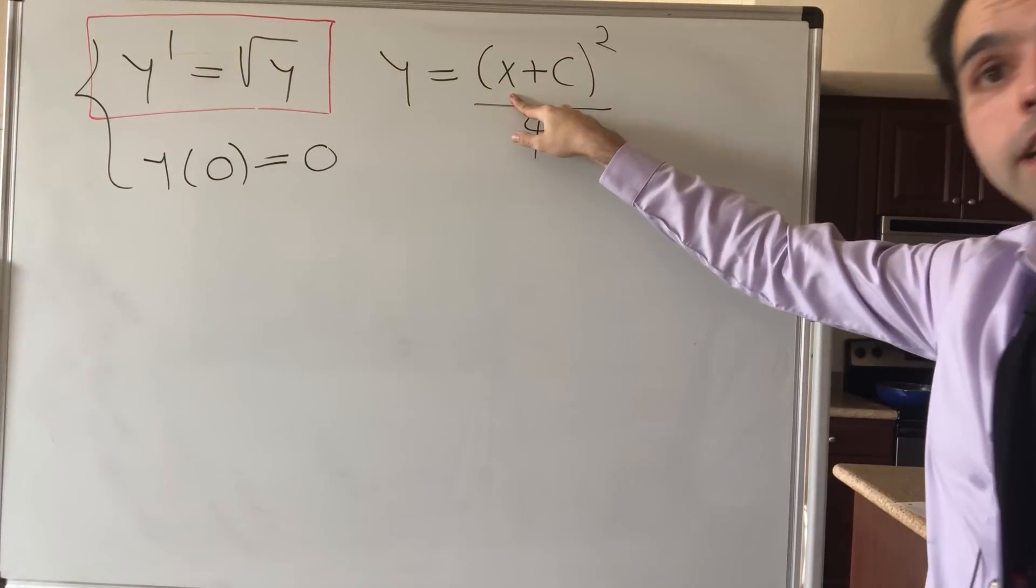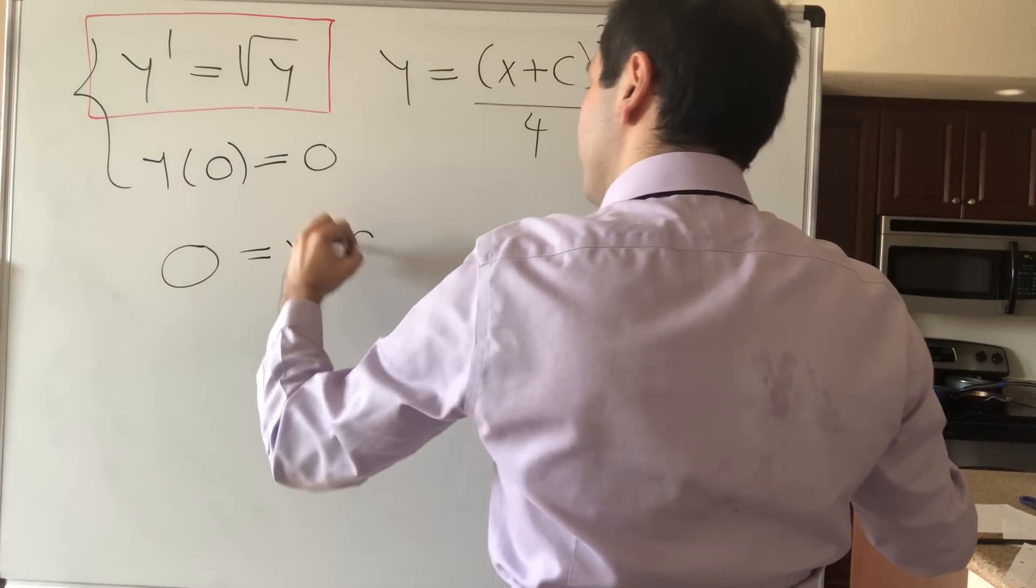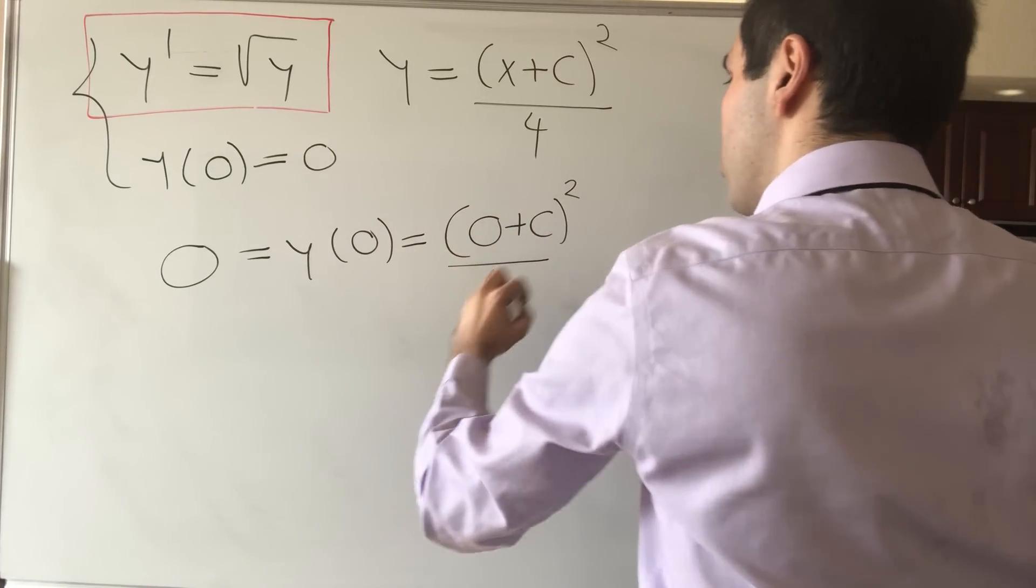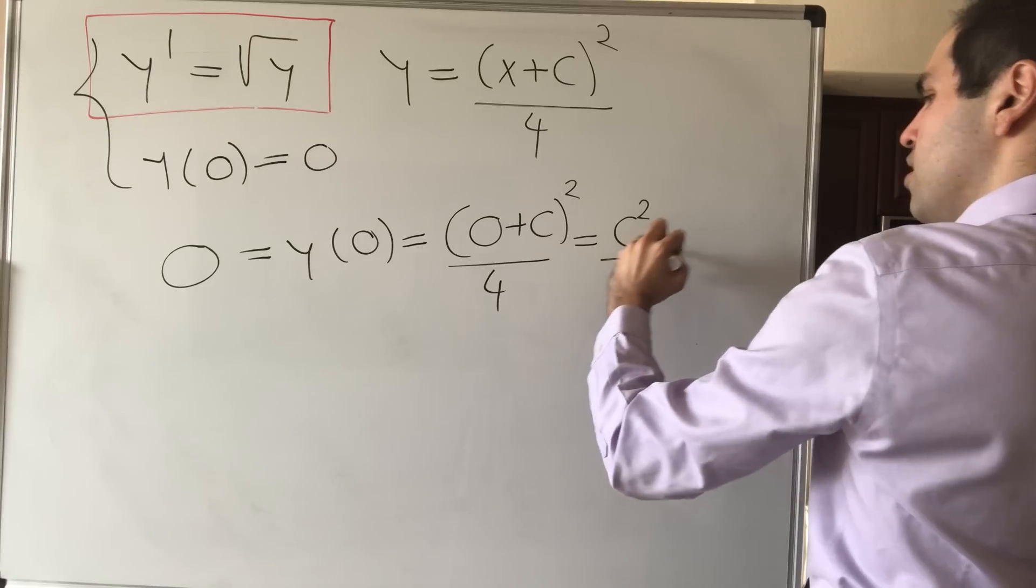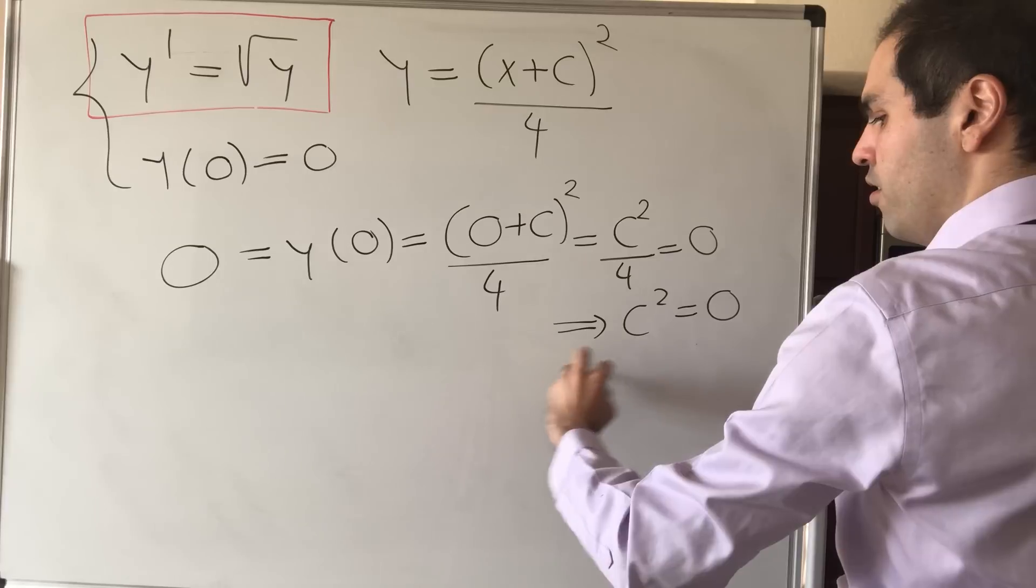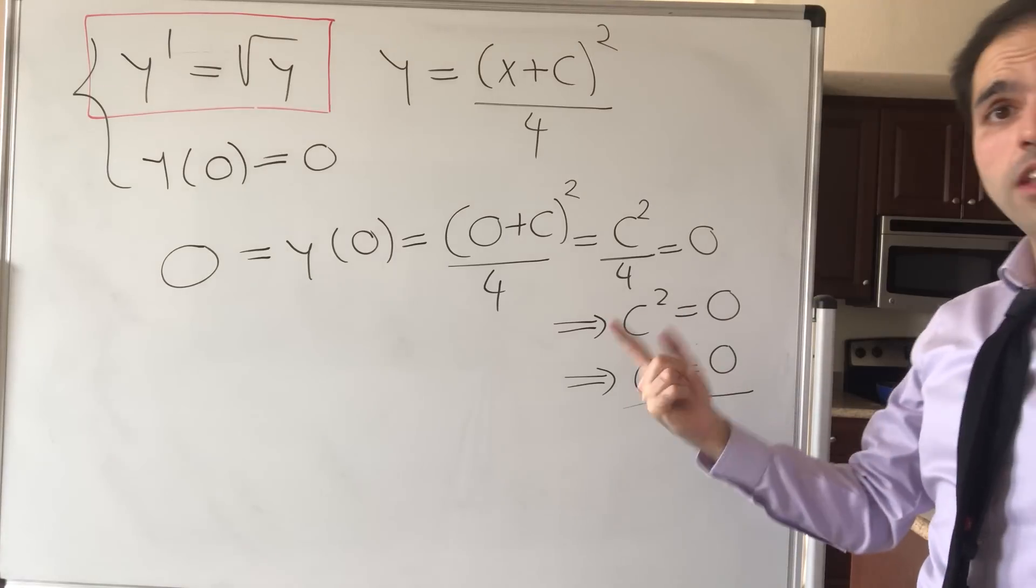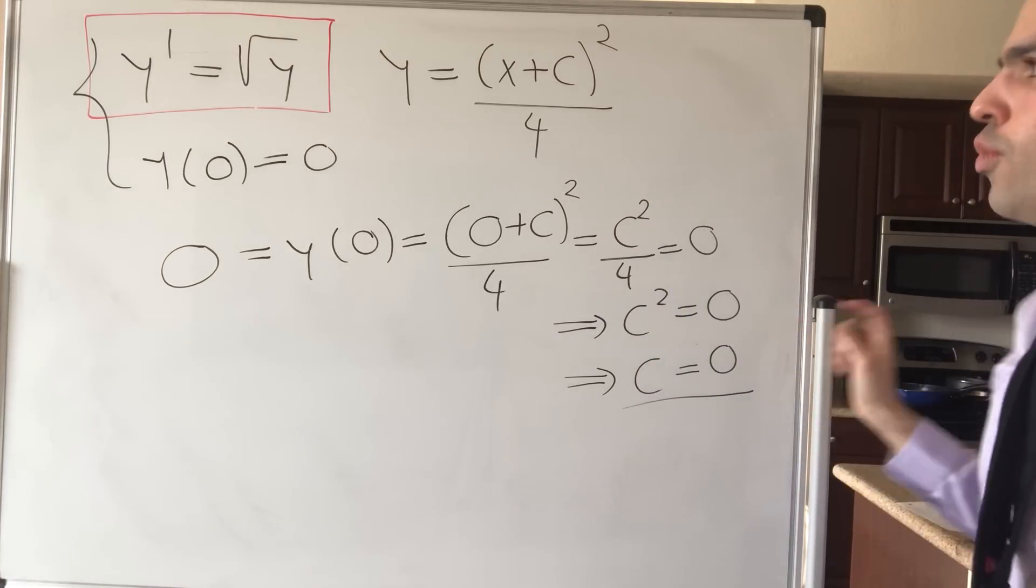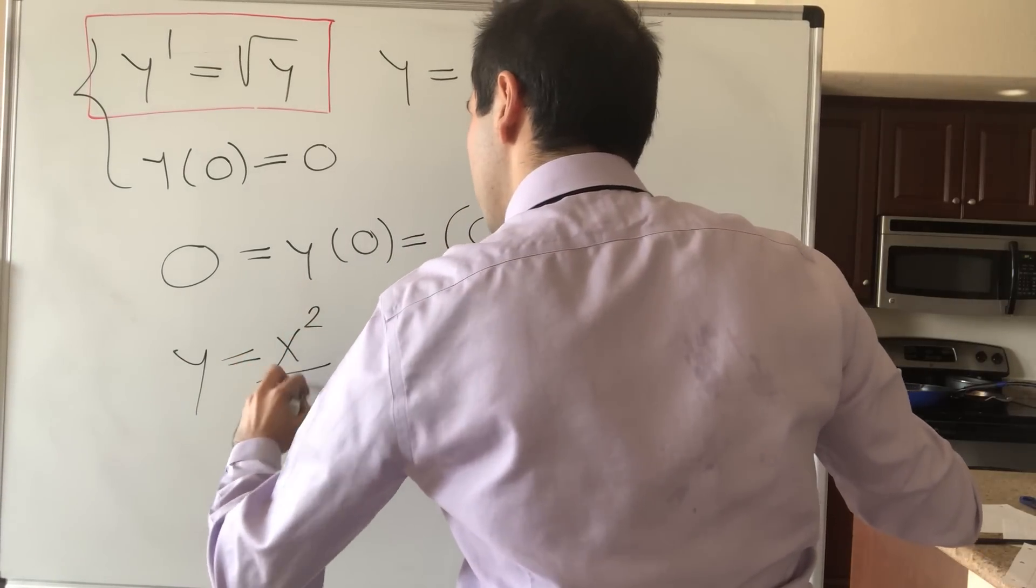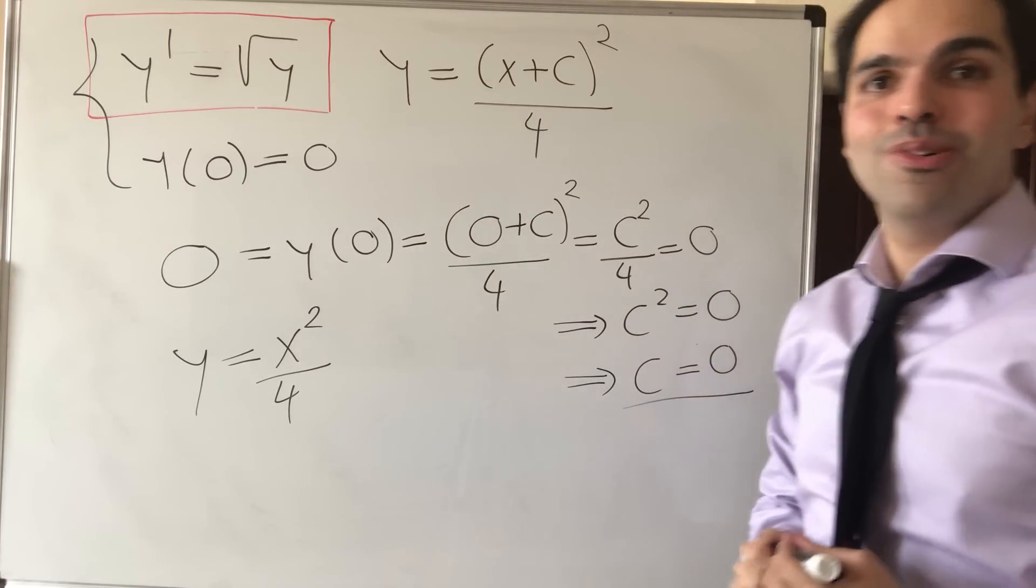Well, if you plug in x equals 0, what happens? So on the one hand, 0 equals y of 0, but that becomes 0 plus c squared over 4. And that is c squared over 4. You set that equal to 0. So then you get c squared equals 0. And the only solution with that is c equals 0. Which tells us that a solution of this equation is y equals x squared over 4.